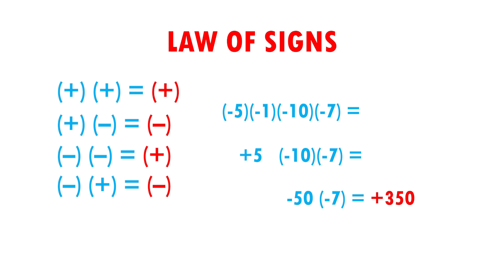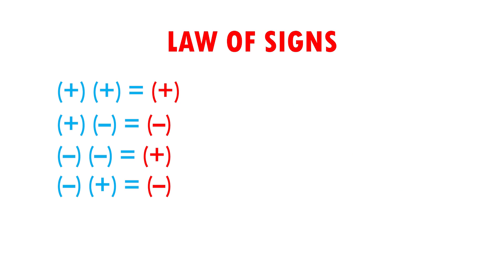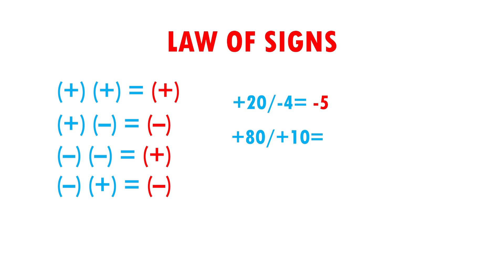The rule of signs is also used in divisions. Let's see some examples. Here I have plus 20 divided by minus 4. Positive divided by negative gives me negative, and 20 divided by 4 is 5. My result is minus 5. Now I have plus 80 divided by plus 10. Positive divided by positive gives me positive, and 80 divided by 10 gives me 8. My result is plus 8.